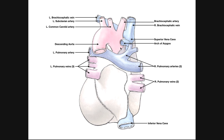We can see the ascending aorta and the arch of aorta here, but now viewed from the reverse direction. The first artery off the arch is the brachiocephalic artery — on the opposite side here in the picture — which is always the first to branch off. The second is the left common carotid artery, and the third is the left subclavian artery. Here is the descending aorta — the thoracic aorta — and once it crosses the diaphragm, it becomes the abdominal aorta.